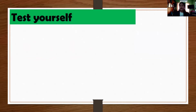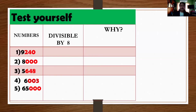So let us see and test yourself. I have here five numbers. Tell me if this is divisible by 8 and why. You have to apply the two rules: if the last three digits is divisible by 8, and if it ends in 3 zeros, that is divisible.